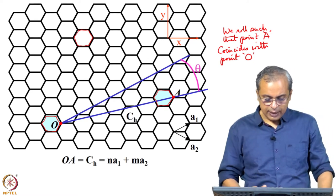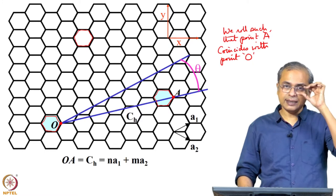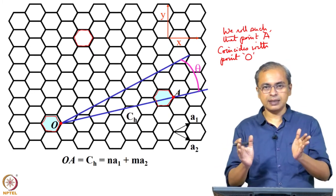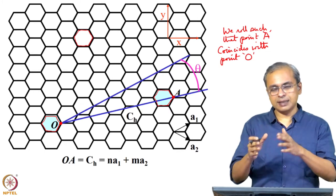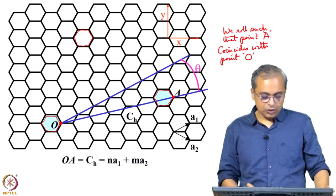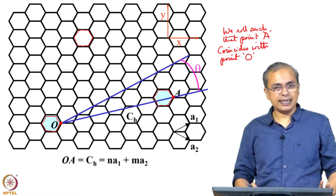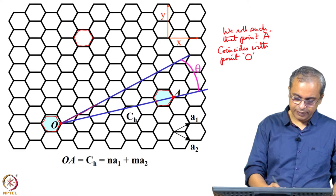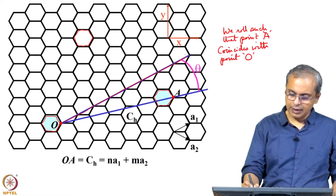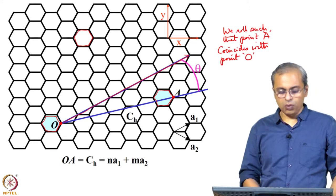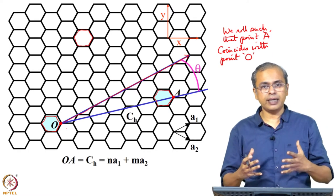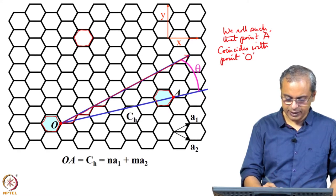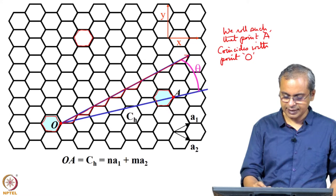This gives us a much more specific way of specifying how the sheet was rolled. If you and I both have separate graphene sheets and we specify O and A like this, then roll the sheet so that A coincides with O, the two tubes we get will be identical — same kind of twist — and therefore many of the properties will be defined appropriately.